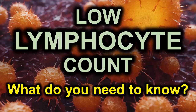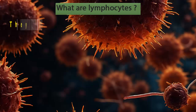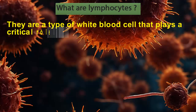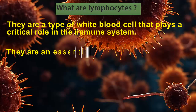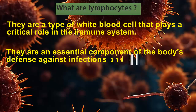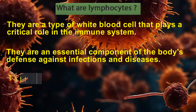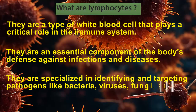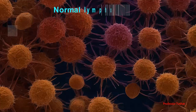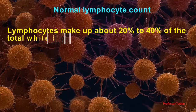Low lymphocyte count — what do you need to know? What are lymphocytes? They are a type of white blood cell that plays a critical role in the immune system. They are an essential component of the body's defense against infections and diseases, specialized in identifying and targeting pathogens like bacteria, viruses, fungi, and parasites.